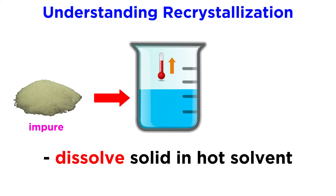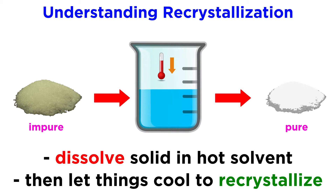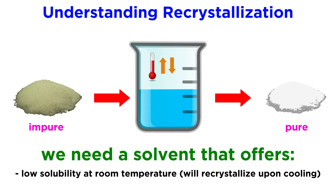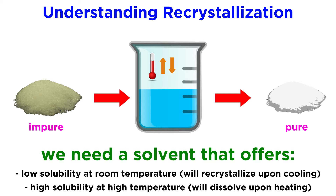So recrystallization is quite a simple technique — it really just consists of dissolving a solid in hot solvent, and then allowing things to cool so that it crystallizes again, but this time with very little of the initial impurity within the lattice. The trick is to choose the correct solvent that will allow this to proceed properly, since we need the solid to be relatively insoluble in this solvent at room temperature, yet soluble at higher temperatures.